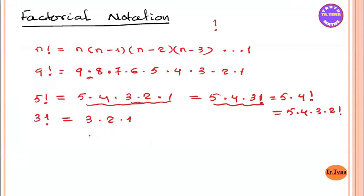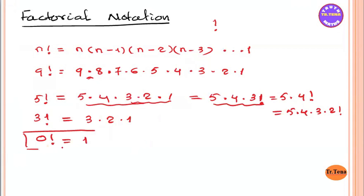The first thing is we will recap 0 factorial. The 0 factorial is 1, it's not zero — it is one.